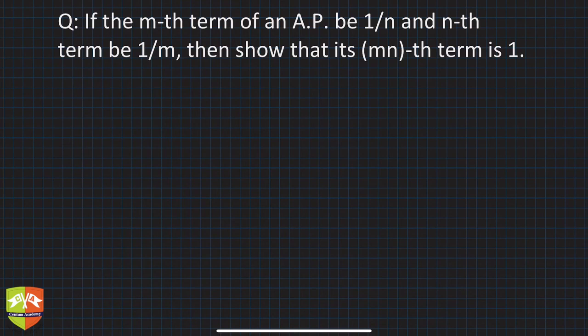Hello friends, welcome again to a problem solving session on sequence and series. So far we have been discussing the general term of an arithmetic progression. In this question, if the m-th term of an A.P. be 1/n and n-th term be 1/m, then show that its (mn)-th term is 1.